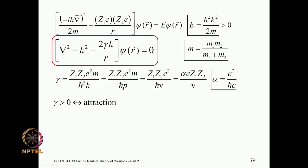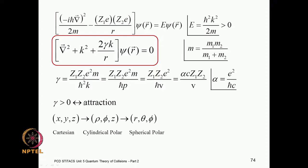When γ is positive you have an attractive interaction, which is the case in the electron-proton hydrogen atom system. We could use any coordinate system — Cartesian, cylindrical polar, or spherical polar — and you always choose a coordinate system well adapted to the symmetry of the Hamiltonian. In our previous course we solved the problem in spherical symmetry, because the Coulomb interaction goes as 1/r and has spherical symmetry, making that the appropriate coordinate system.